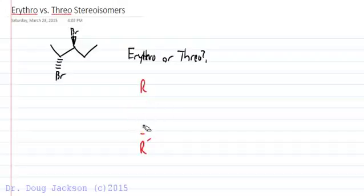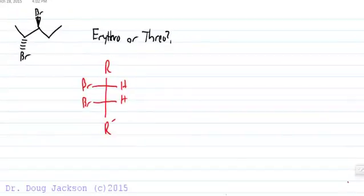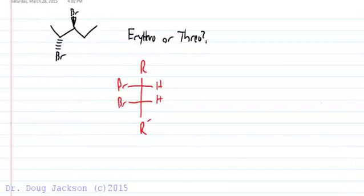By this designation, erythro means that our group, say bromine for example, is on the same side as its partner bromine. Likewise, we could have another erythro isomer that has the bromines on the other side. So we have two different erythro isomers.